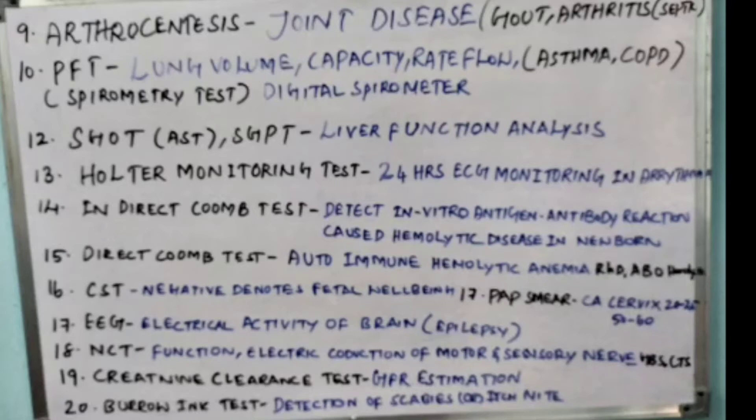Twelfth point: SGOT, otherwise called AST, and SGPT, otherwise called ALT. These are used to find out liver function abnormalities or analysis.